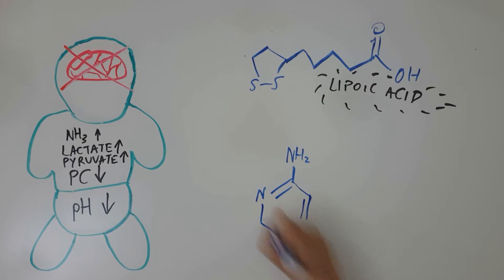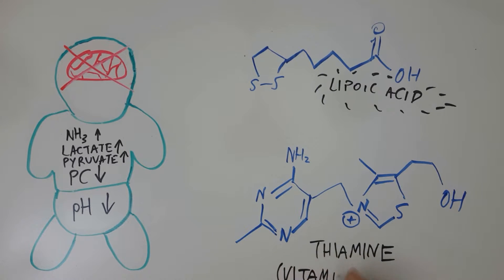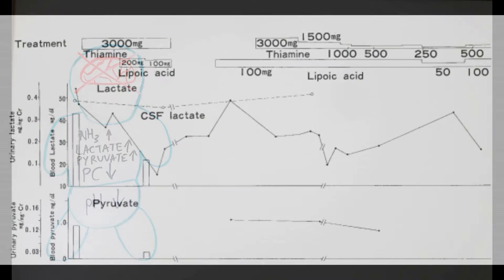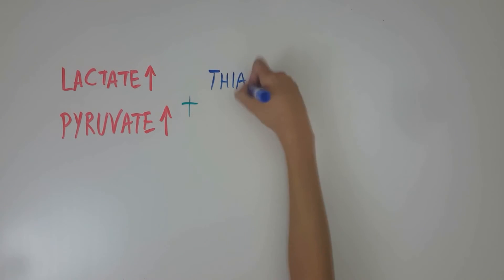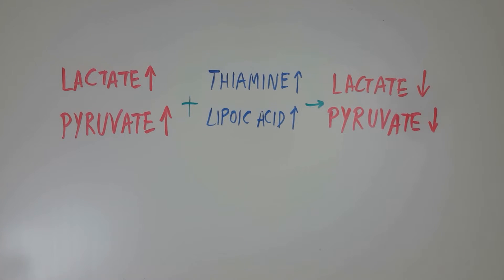The doctors treated her with thiamine and lipoic acid — 100 mg of lipoic acid and 3 g of thiamine administered once daily. After 2 weeks, the blood lactate returned to normal range and urinary lactate excretion decreased from 0.37 to 0.12 mg per mg of creatinine. Urinary pyruvate excretion also decreased from 0.14 to 0.03 mg per mg of creatinine. When treatment was discontinued at 1.5 months, blood lactate markedly increased, but resumed to normal upon restarting treatment.